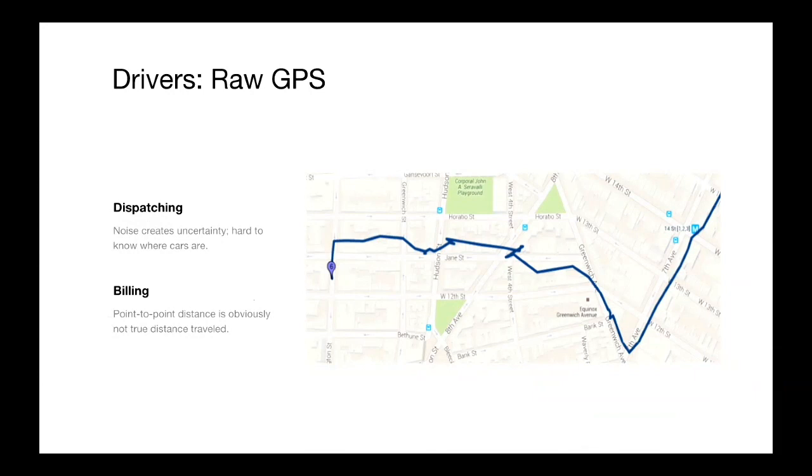Obviously, he's not going to be super happy about that. This kind of uncertainty is actually really difficult for us. It makes it very difficult to understand what's an actual efficient decision, what's believable and what's not. It also creates significant issues for things like billing. If you were to take a straight line distance between all these points, that is not the actual distance traveled. An accurate understanding of where this vehicle actually is at any point in time is super critical to our entire platform.